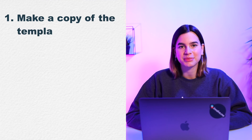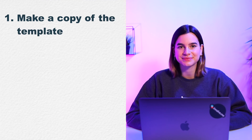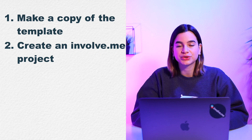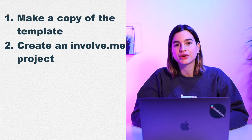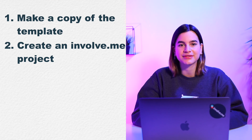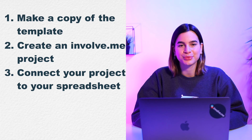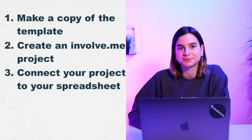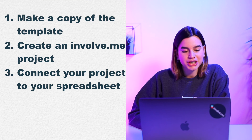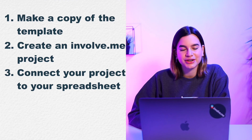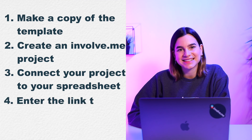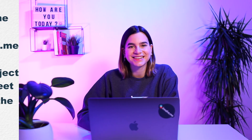To sum it up — to make a custom report for your clients: first, make a copy of the spreadsheet template you'd like to use. Second, create an Involveme project or use an existing one — if using an older project, you can import old data manually into the spreadsheet. Third, connect your project to your spreadsheet by going to Integrations, selecting your project under Project Level, scrolling down to find Google Sheets, clicking Configure, logging into your Google account, and entering the link to the data input sheet.